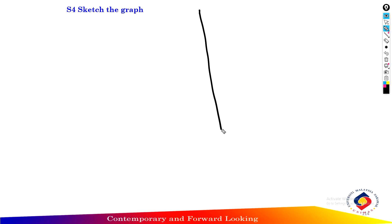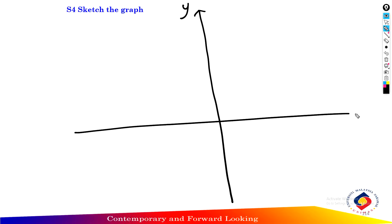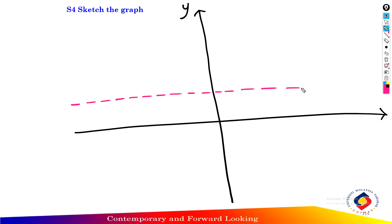Step four: sketch the graph of the rational function. Draw the horizontal asymptote at y equals 1 as a dotted line. Draw the vertical asymptote at x equals 0, which lies along the vertical axis.